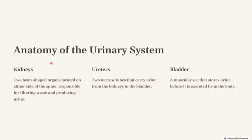Then we have the distal convoluted tubule, also known as the DCT, where additional and final adjustments are made, including electrolyte balance. From there, the filtrate enters the collecting duct, where the final concentration of urine occurs based on the body's hydration status.